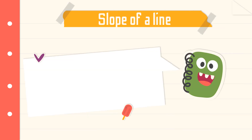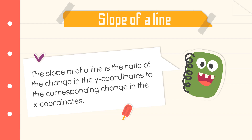To further understand the slope of a line, let us define it. The slope m of a line is the ratio of the change in the y-coordinates to the corresponding change in the x-coordinates. So, it is simply the change in y over the change in x.